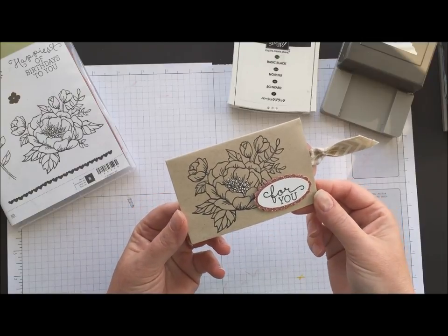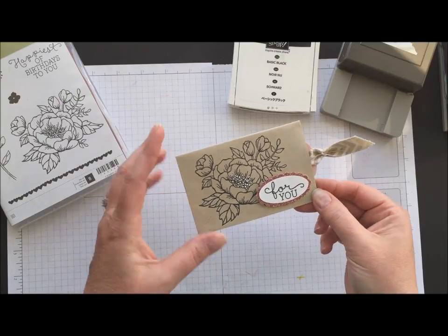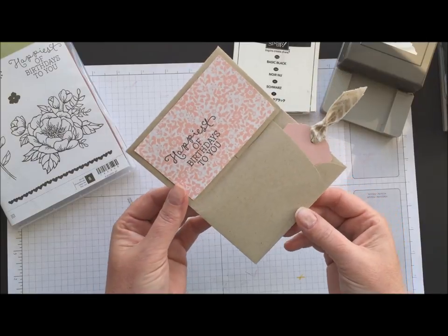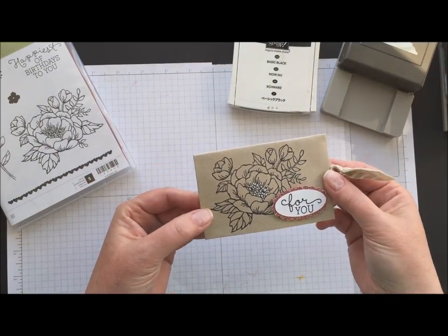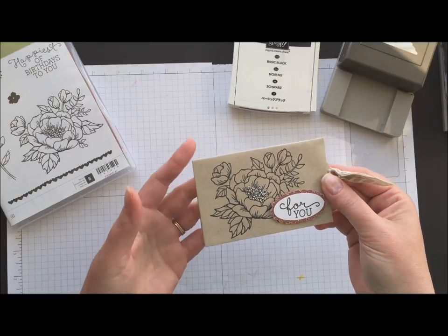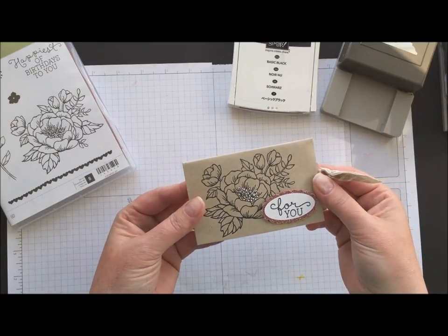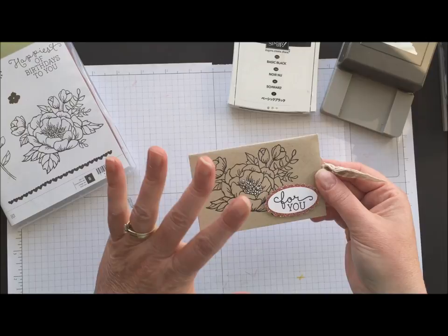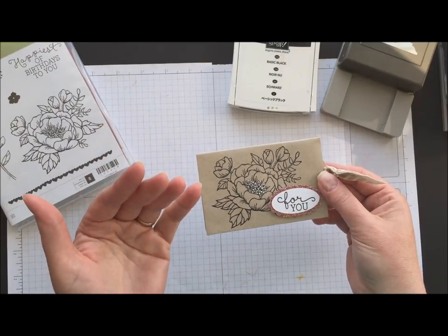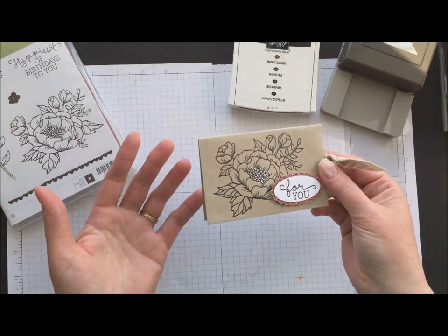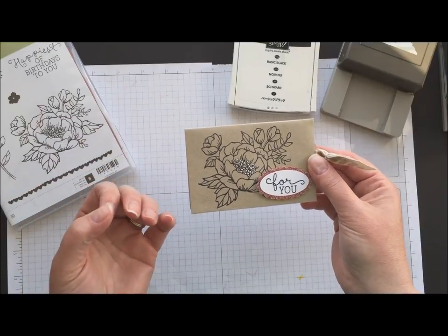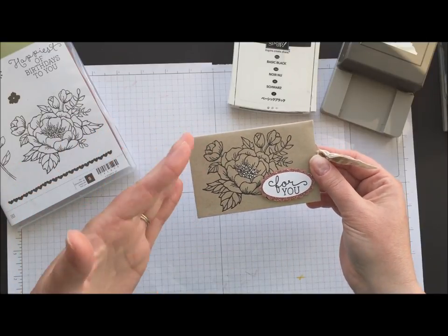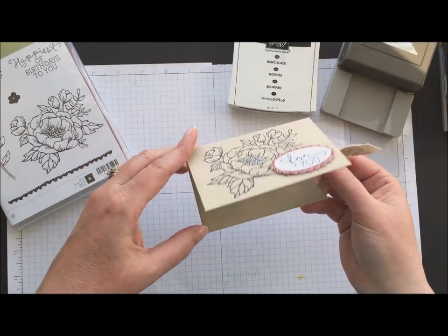I thought today I would show you this really unique gift card holder that is from one of our crumb cake envelopes. So I was doing some research for my stamp club last week and I came across this on Song of My Heart Stampers and I thought, fabulous! This is so quick and so easy but one of those nice projects to have in your back pocket whenever you need a really quick gift for somebody. It kind of is a card and a gift card holder all in one.